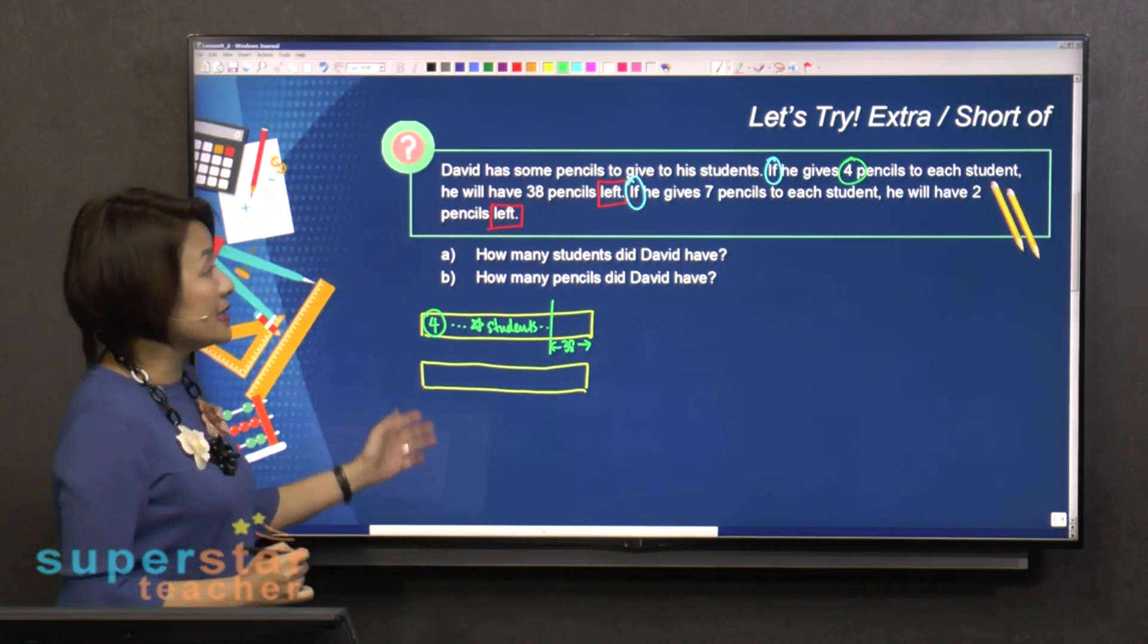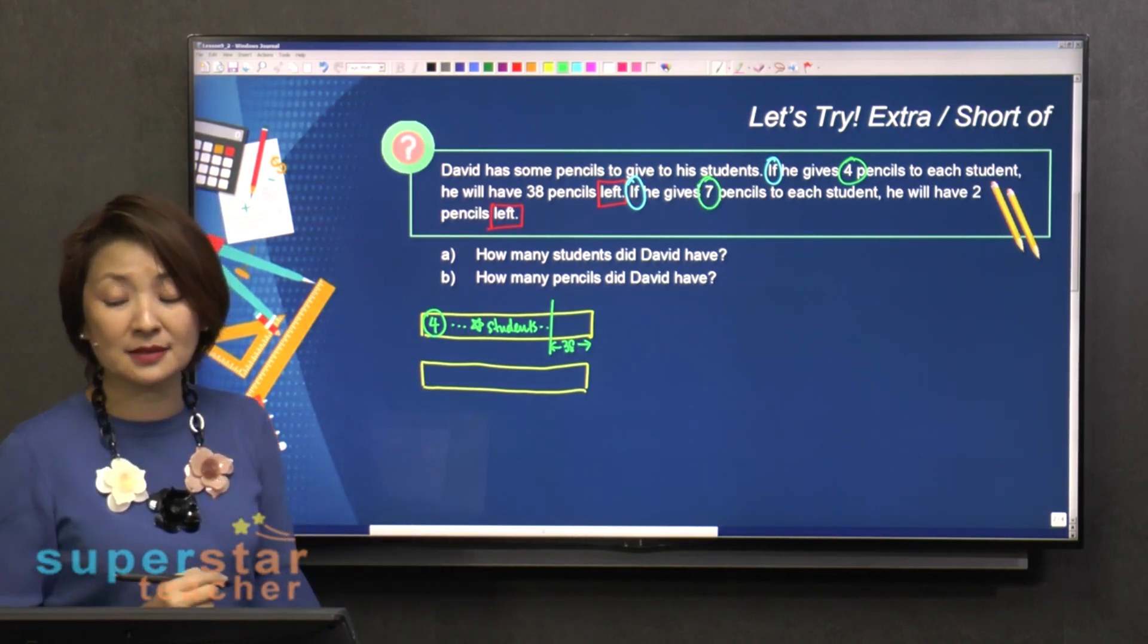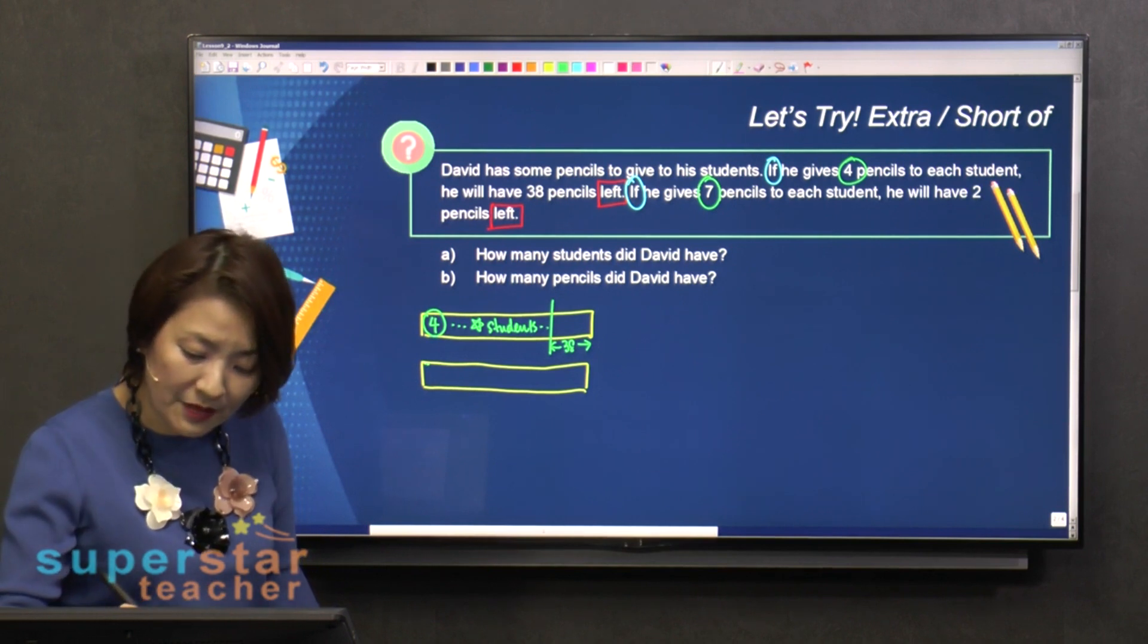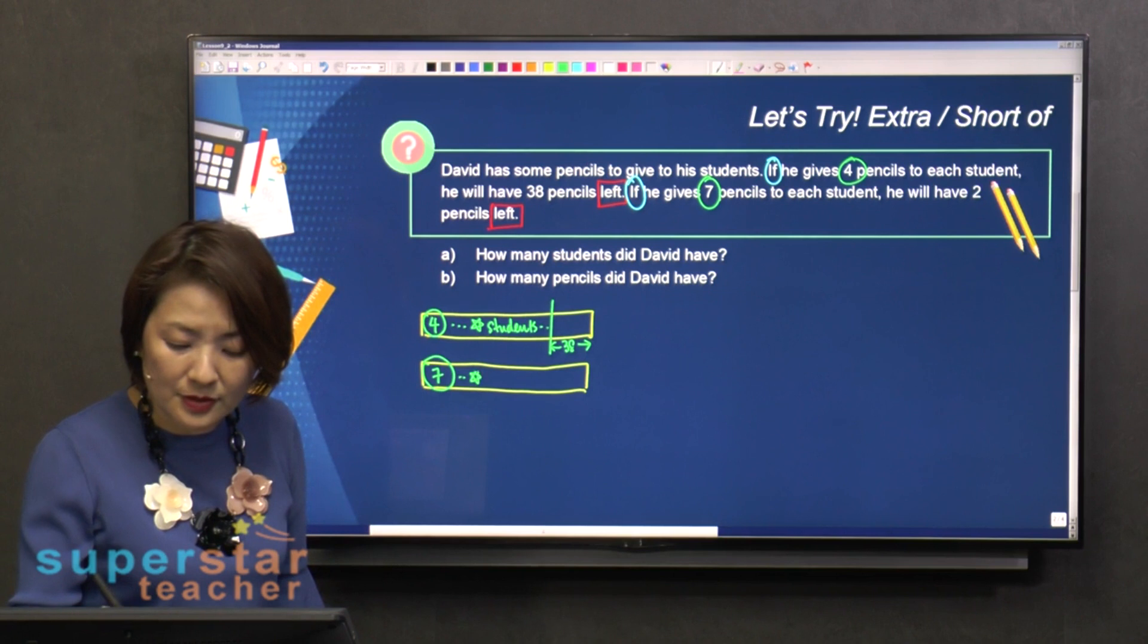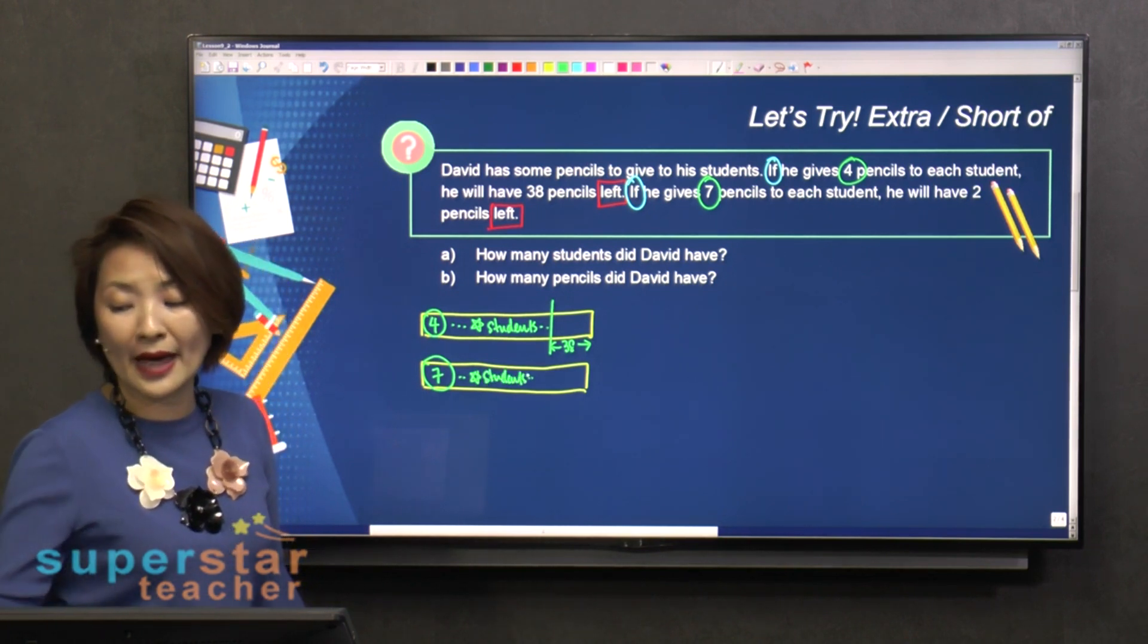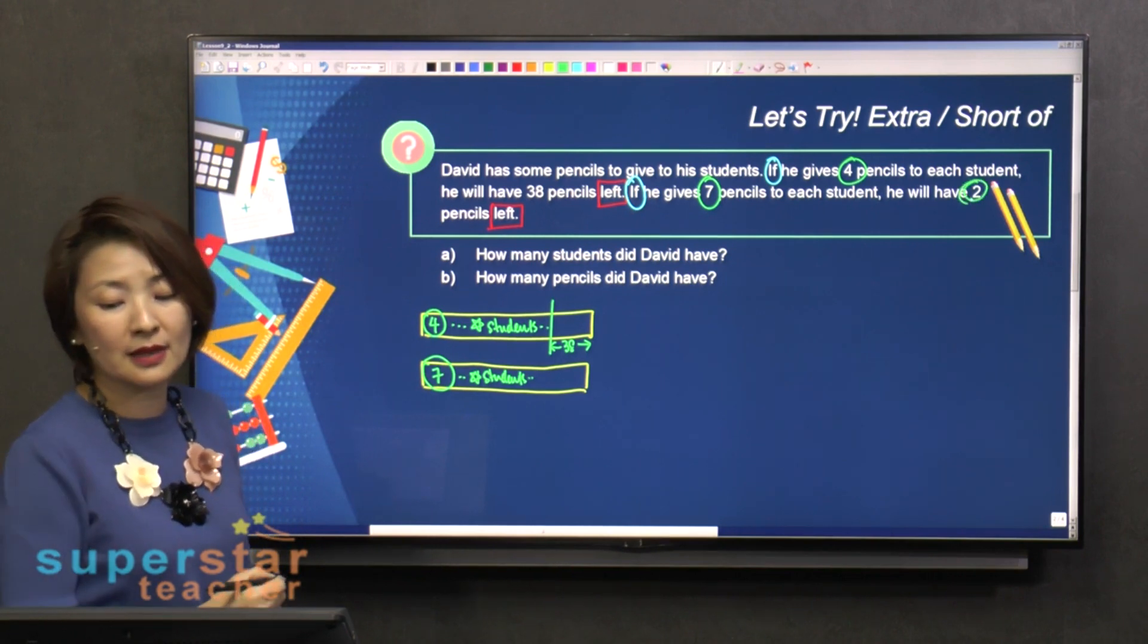And then if you look at the next scenario, it says that if he gives seven pencils to each student, seven pencils to each student, star number of students, same number, right? And what happens?